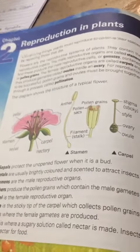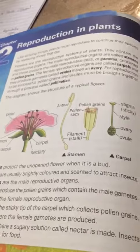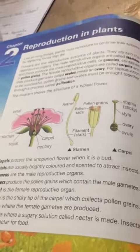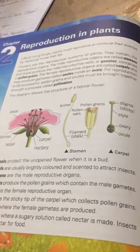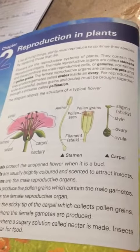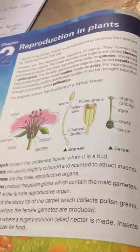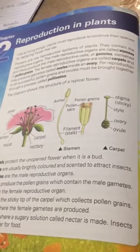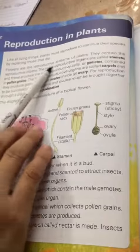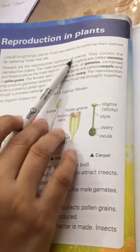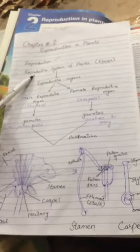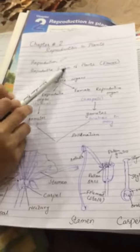New individuals, which we also call offspring, are produced from their parents — this is the reproduction process. The same applies to plants as well. Now, what are the reproductive parts of a plant? What is the reproductive part of the plant, and what is this reproductive system?